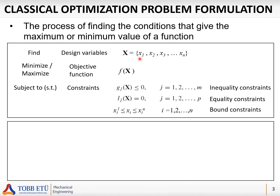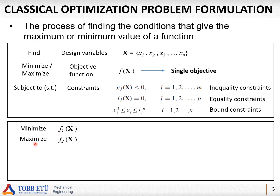We also have bound constraints, which are lower and upper bounds on the design variables — they are not allowed to change between negative and positive infinity. If the objective function is only one, this gives us a single-objective optimization. But we can also have multiple objectives — for example, minimize f1 and maximize f2 — giving us a multi-objective optimization problem. We can have more than two objectives as well.